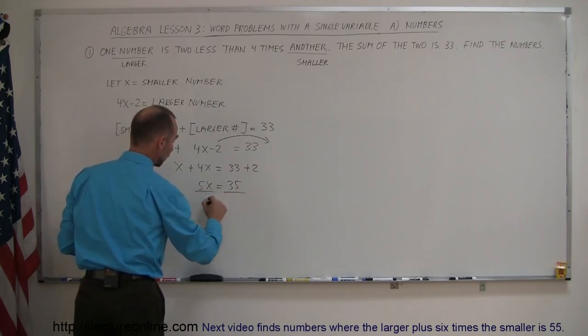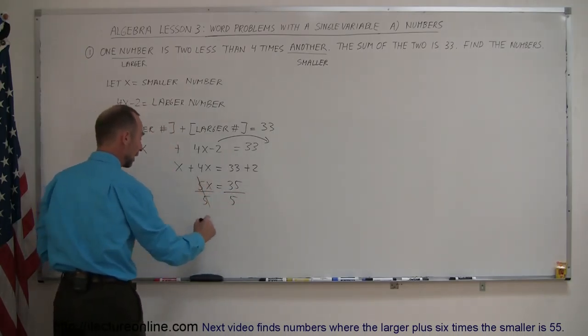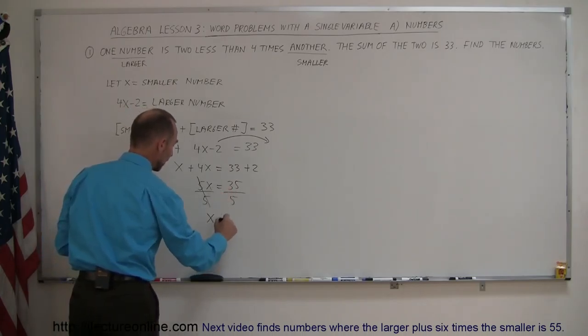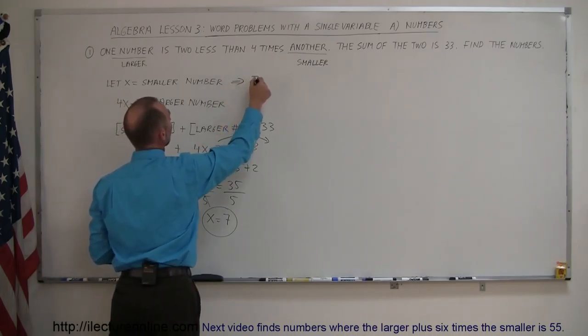Now we divide both sides of the equation by the numerical coefficient in front of x, so that cancels out, and x equals 35 divided by 5, which is 7. So the smaller number is 7.